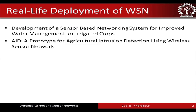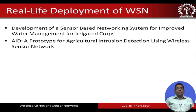The first application is the development of a sensor node for improved water management for irrigated crops. This particular solution is actually deployed in IIT Kharagpur in our experimental farm. We have already deployed it — it is functional, it is operational, and we are able to get data from the field continuously.